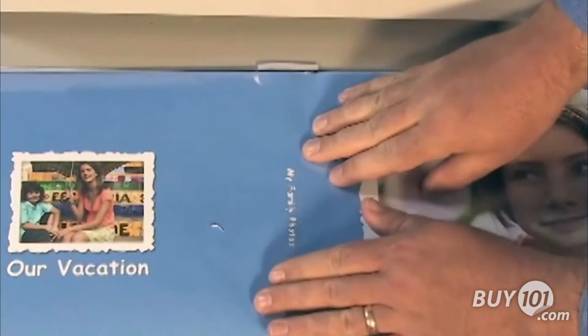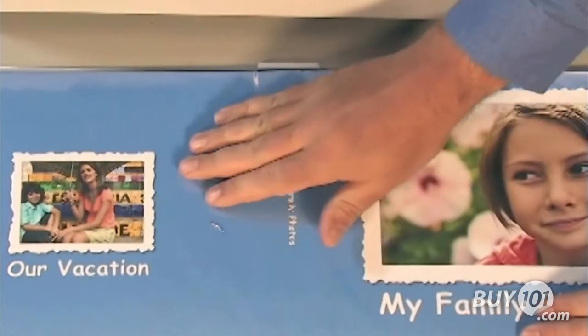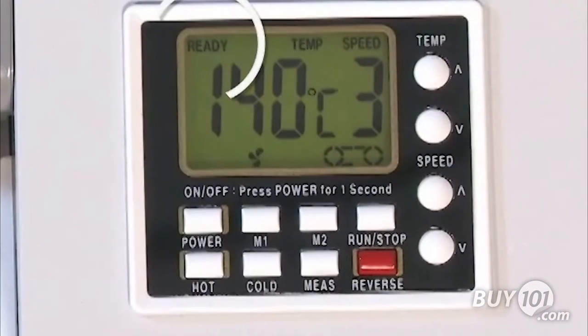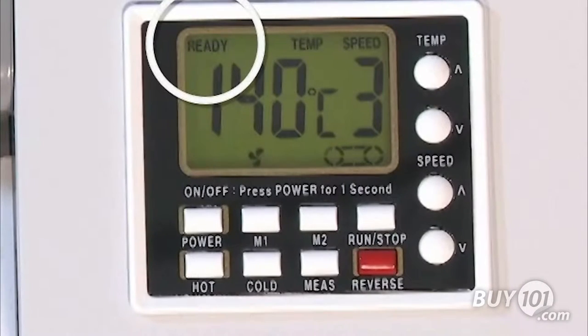Inspect the cover for hairs, dirt, or other debris. Clean off any debris before feeding the cover into the laminator. Make sure the laminator is ready. The word ready must show in the top left corner of the display. This indicates the laminator has reached the set temperature. Also make sure the display shows temperature 140 degrees Celsius and speed 3.